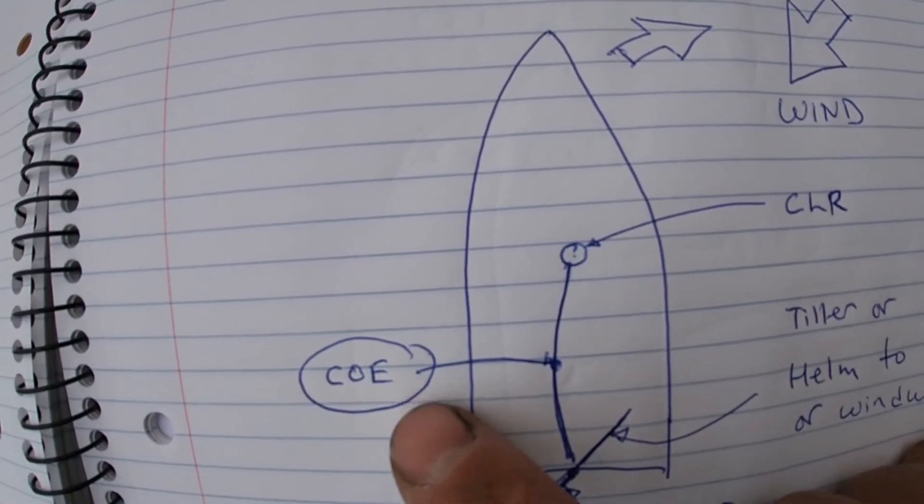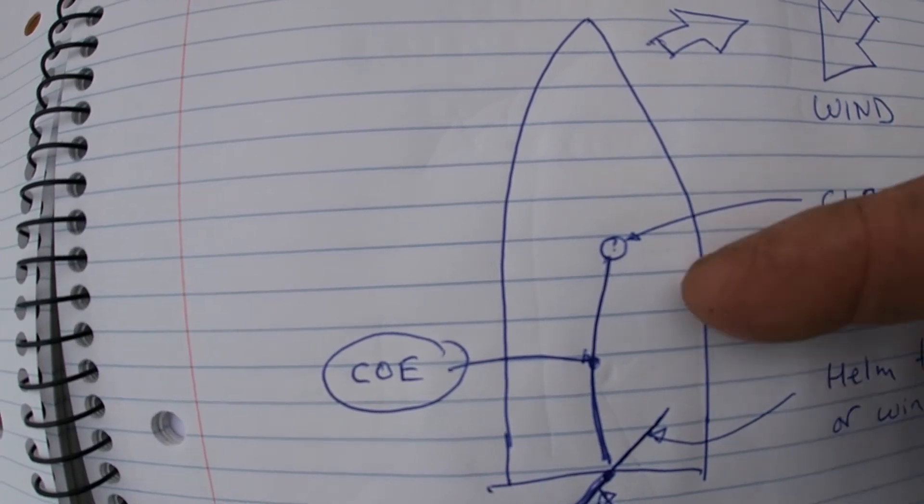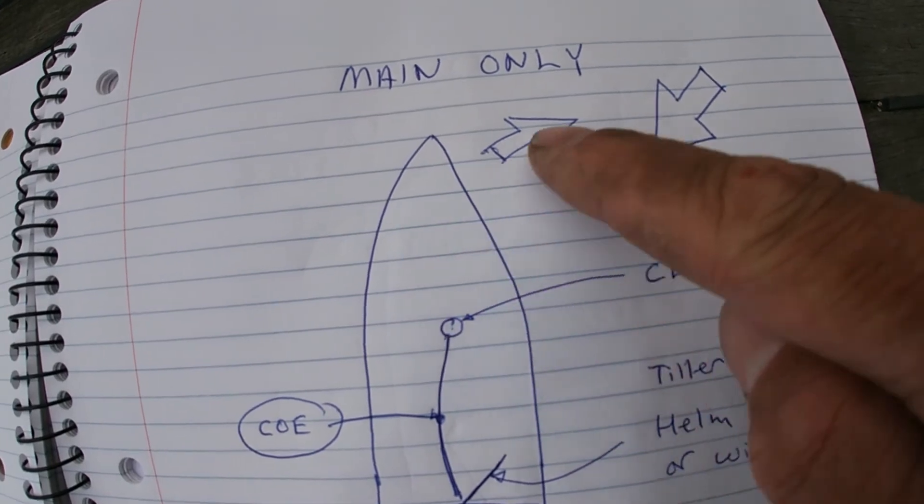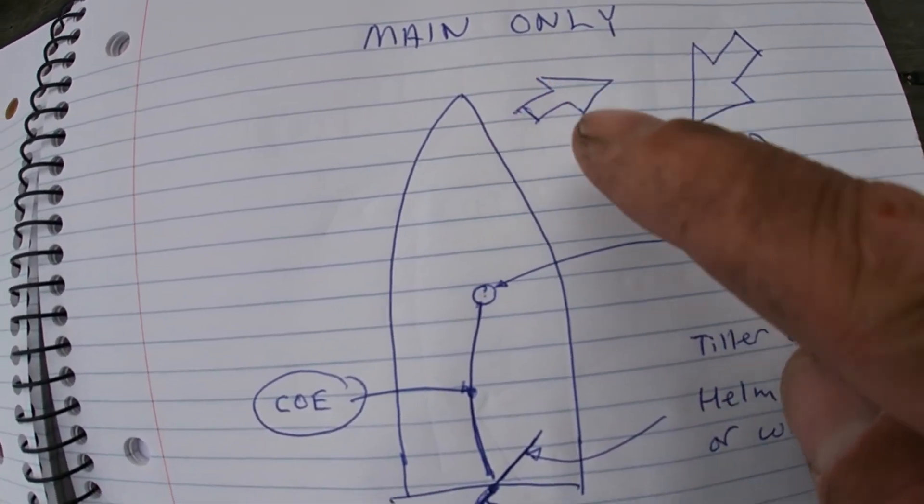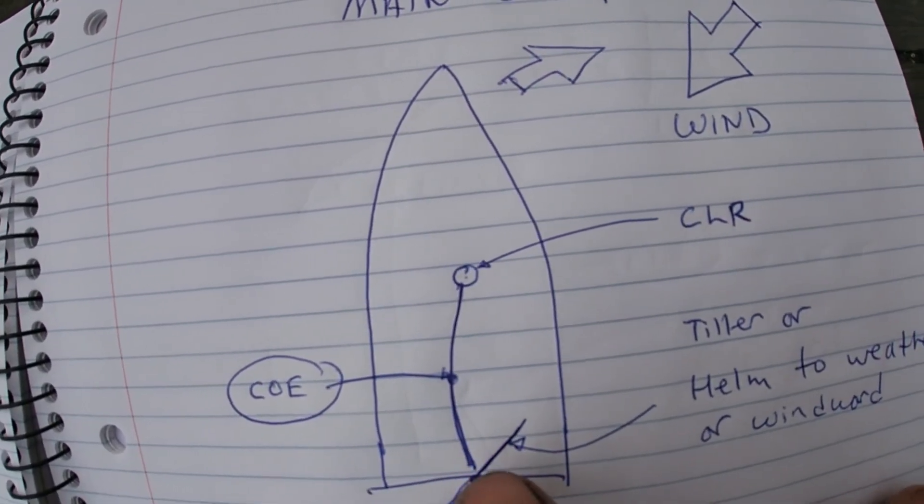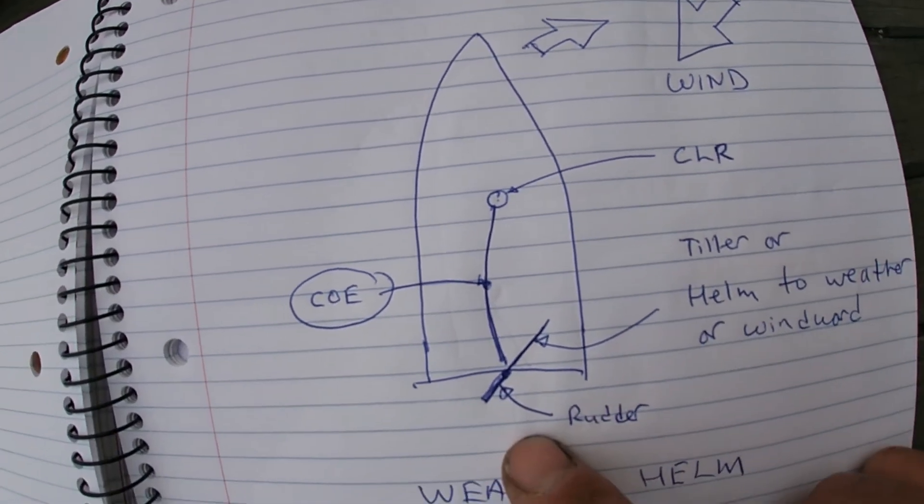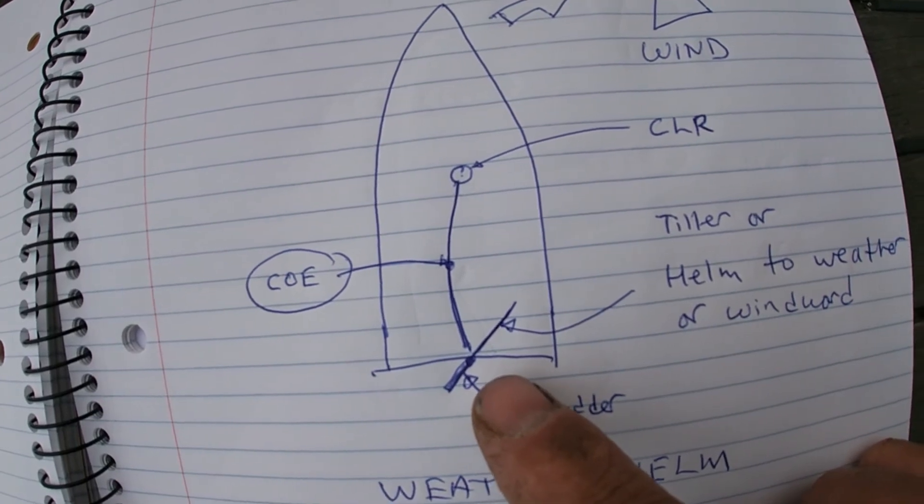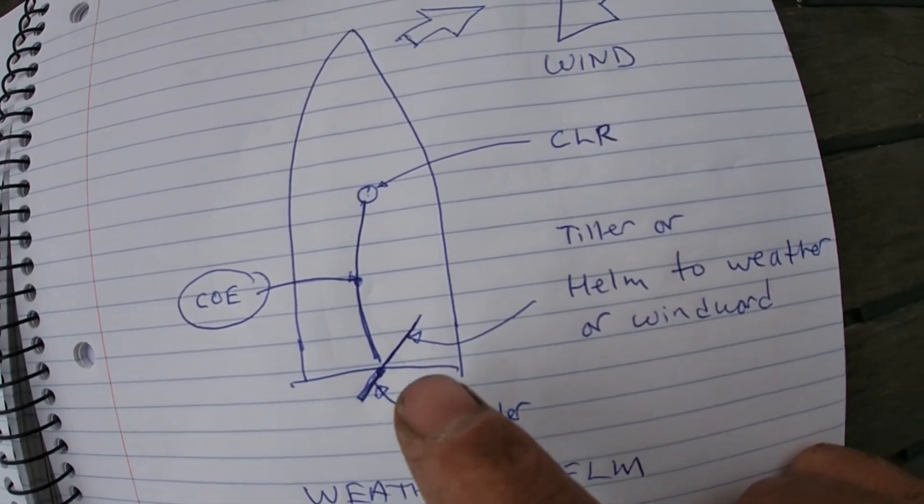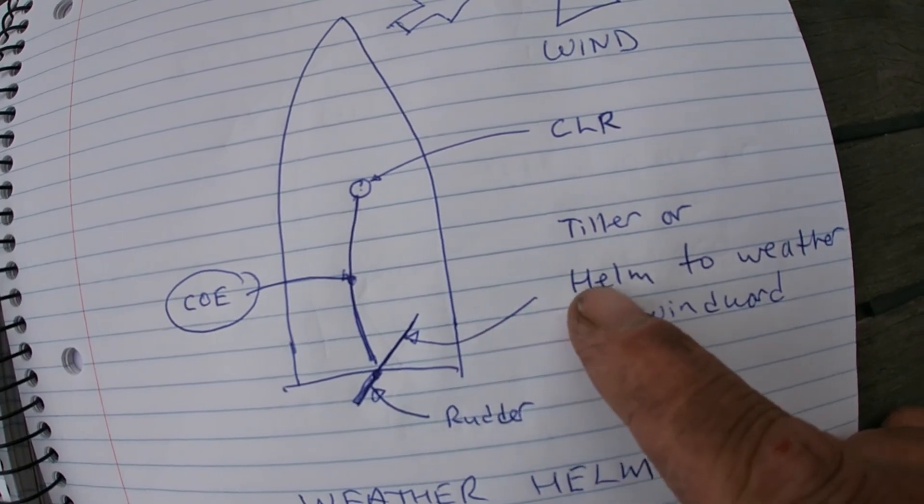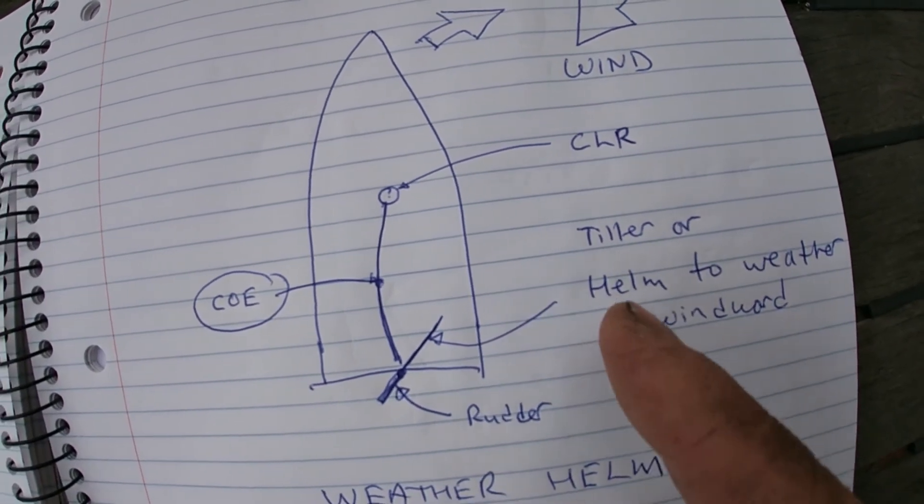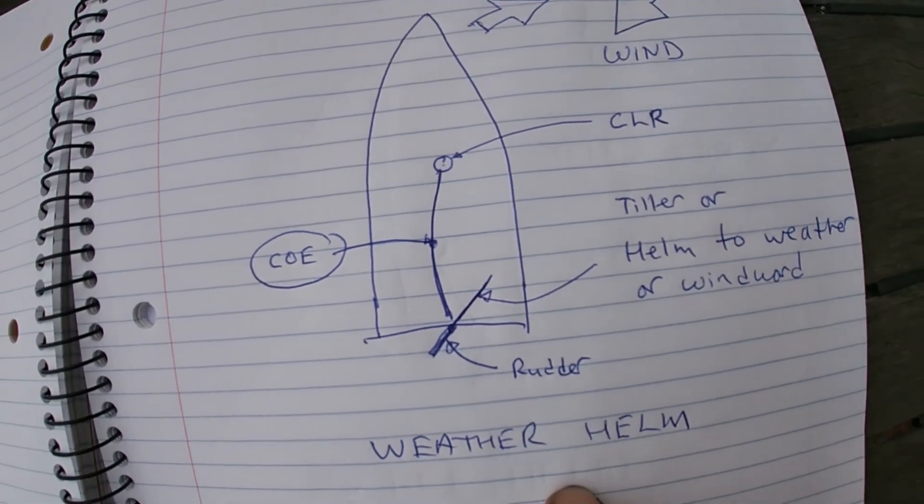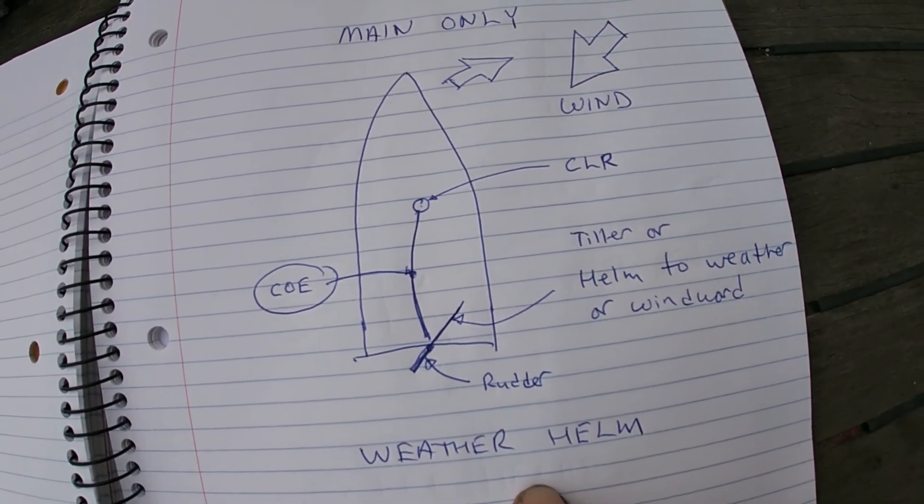The wind is hitting the center of effort and effectively pushing the bow up into the wind, as you can see. So the boat is trying to go into the wind. So we've got to counteract that by moving the tiller to windward or to weather, if you will. So the helm has to be moved to weather so that the boat, you can steer the boat back downwind. And this is what's called weather helm.